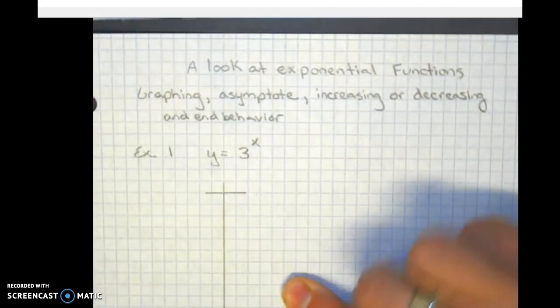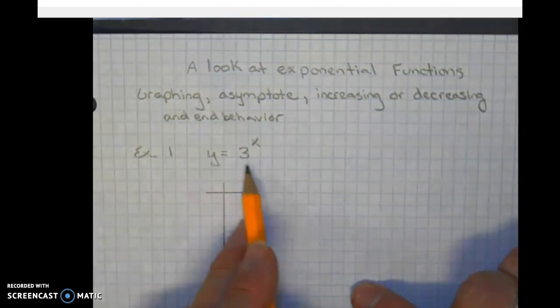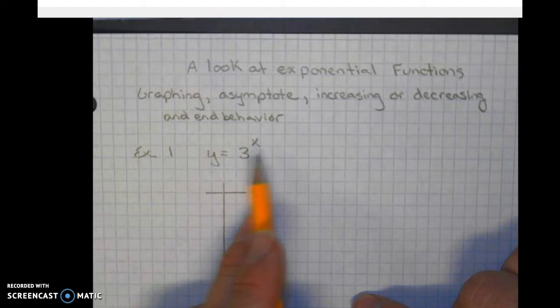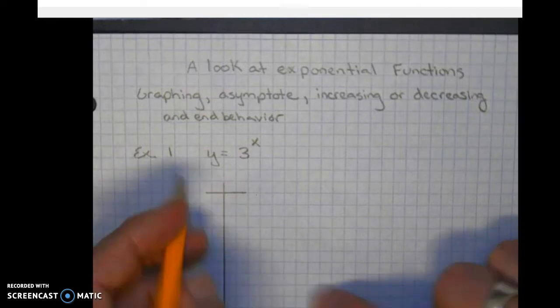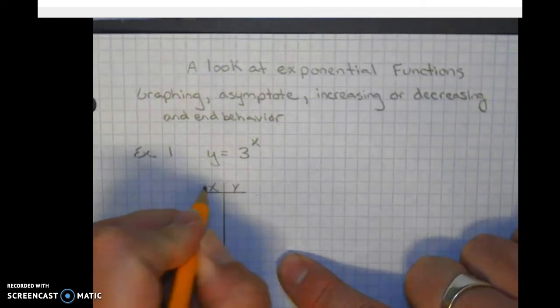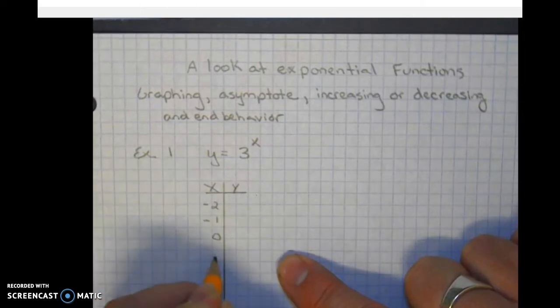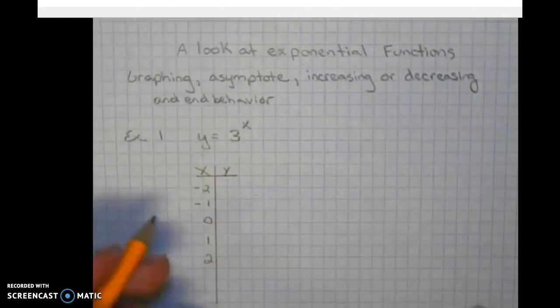This is actually a parent function. The reason why it's a parent function is because there's no transformations, there's no stretch or compression, nothing is going on with the x. So first thing we're going to do here is pick some values for x. Let's pick some negative values and some positive values. Let's plug them in and see what we get.